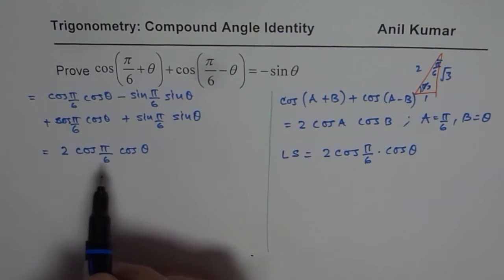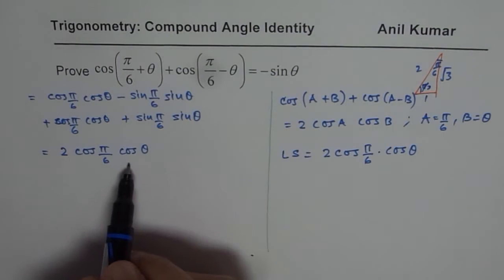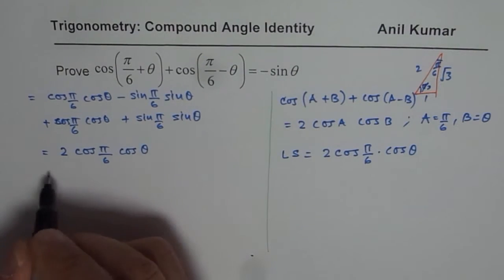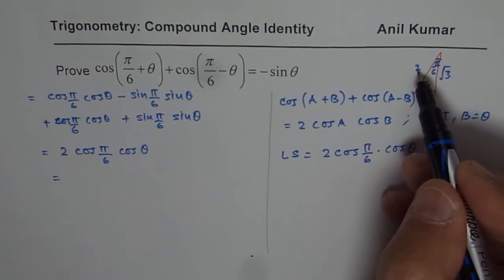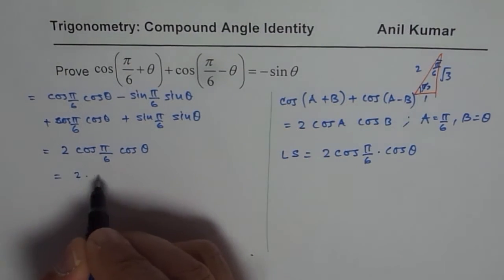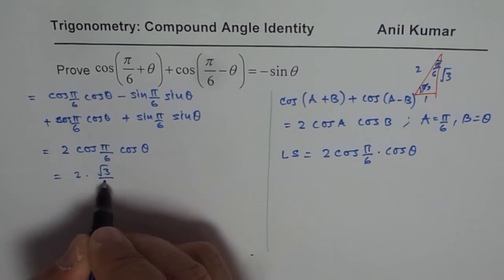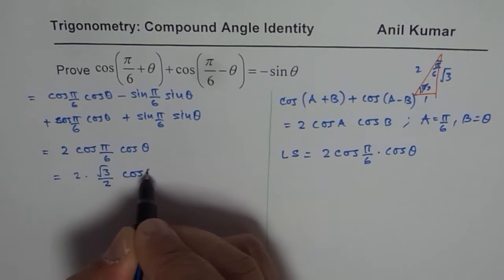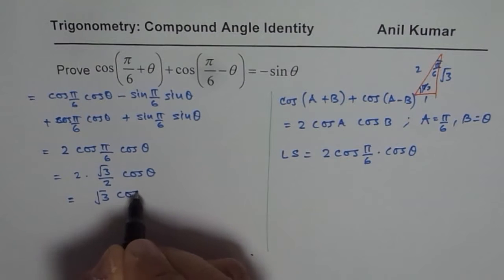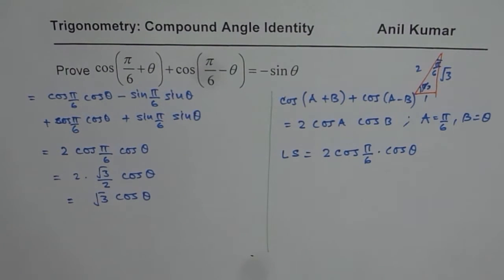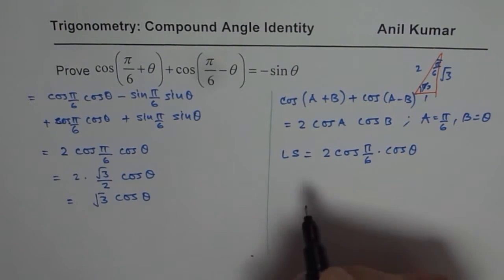Now, let's go back to this one. We have 2 cos pi by 6 cos theta. When you substitute cos of pi by 6, which is square root 3 over 2, we get 2 times square root 3 over 2 times cos theta, which gives square root 3 cos theta. That is what you get from the given expression.